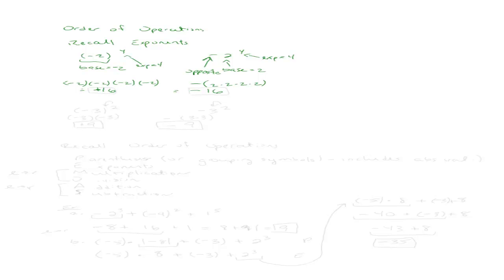Let's try the difference between negative 3 squared and the opposite of 3 squared. Because the exponent applies to everything inside the parentheses, negative 3 is the base, and we multiply negative 3 times itself, giving positive 9. For the second one, the base is 3, and the opposite of 3 squared is the opposite of 9, which is negative 9. Again, different answers even though the problems look similar.